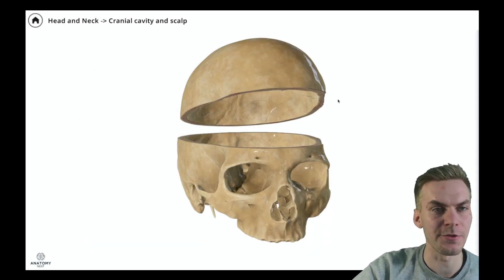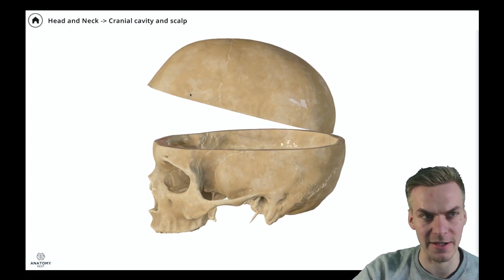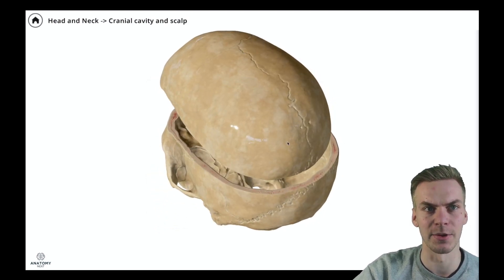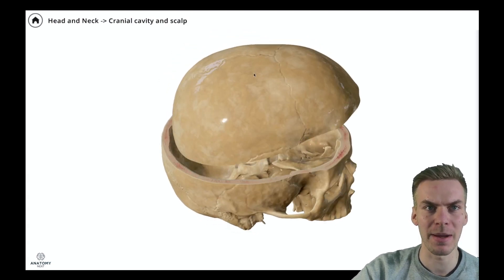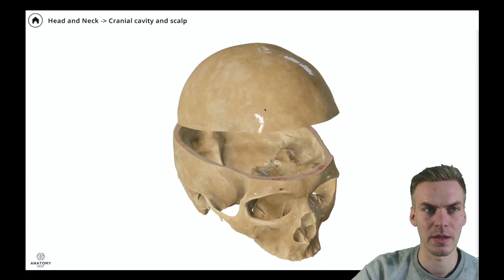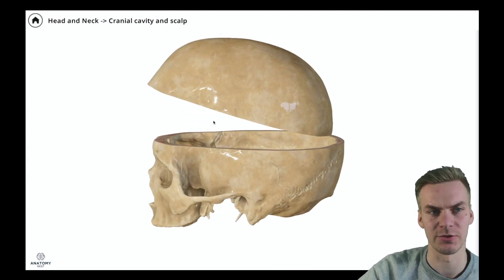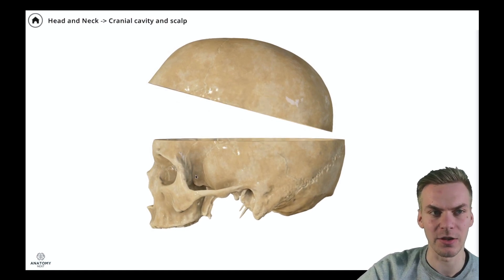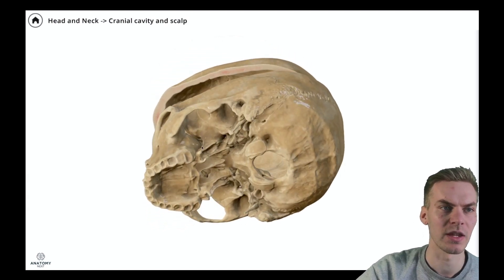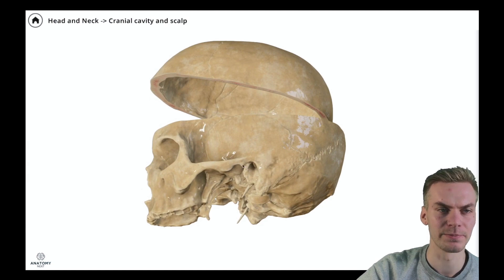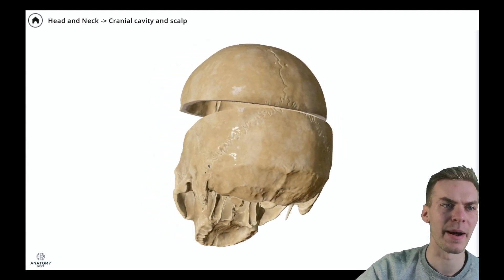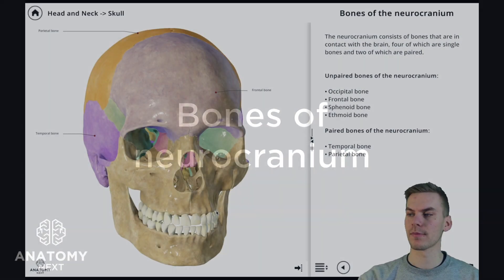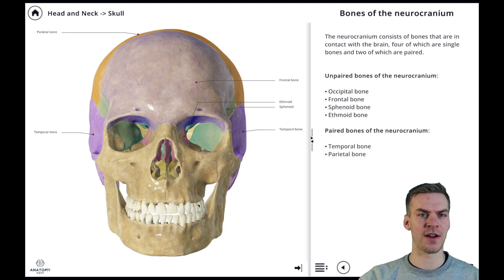The neurocranium can be further subdivided into the calvaria and the cranial base. The calvaria is mainly formed by the parietal bones, by the squamous part of the frontal bone, and also a little bit by the occipital bones and the most superior parts of the squamous part of the temporal bone. The cranial base is mainly formed by the sphenoid bone, the temporal bone, and the occipital bones. The neurocranium consists of bones that are in direct contact with the brain.